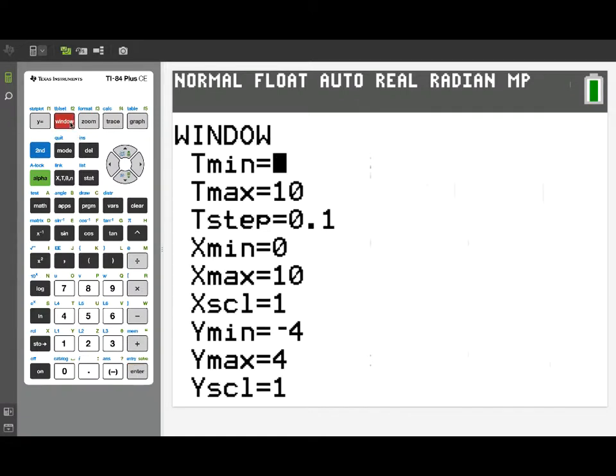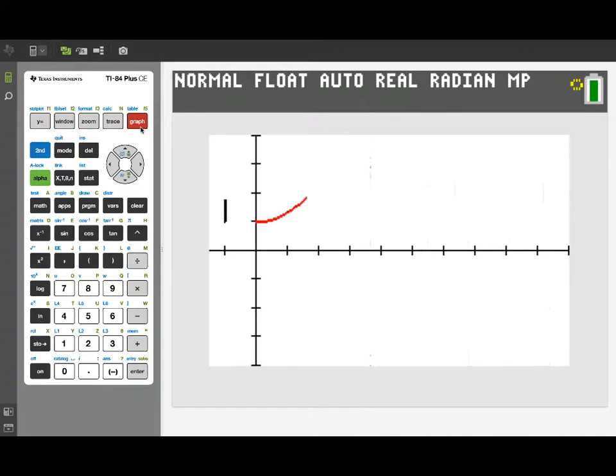Now why have I done this? Well, if I go back to the window, what I'm going to do is slightly change x min to negative 1.5. That's going to leave a space where we can watch an object move along the vertical line x equals negative 1, and that's the object that's moving according to the position function we see here.